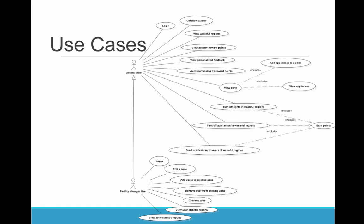The following is a UML use case diagram for both a general user and a Facility Manager user. A general user has the ability to unfollow a zone that he or she is no longer interested in, view Wasteful Regions that consume too much energy, view his or her reward points, receive personalized feedback, and view his or her ranking among all users from a building.